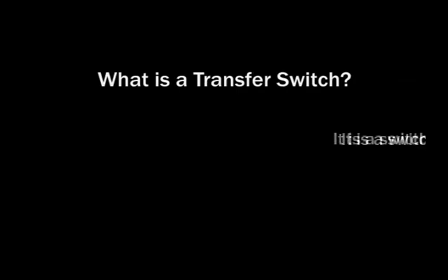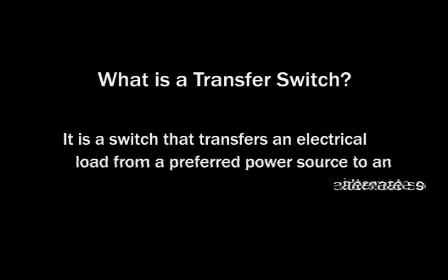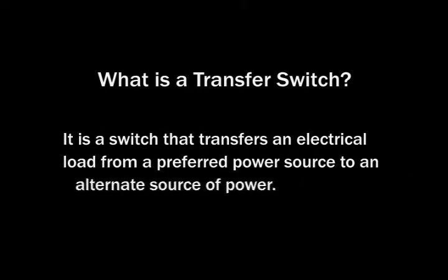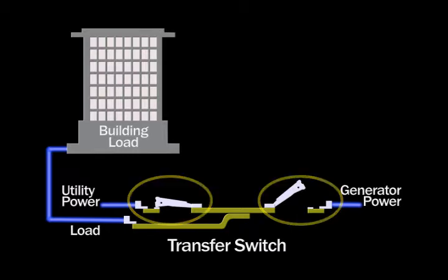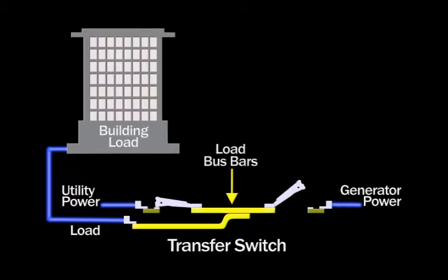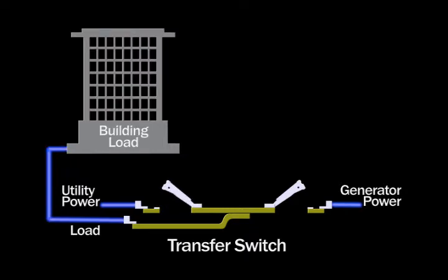A transfer switch is a switch that transfers an electrical load from a preferred power source to an alternate source of power. The load is usually switched from the utility company to an emergency generator. The transfer switch has two sets of electrical contacts, one for each power source, connected together by the load bus bars. The electrical load of the building is connected to the load bus terminals and can be switched to either power source manually or automatically.